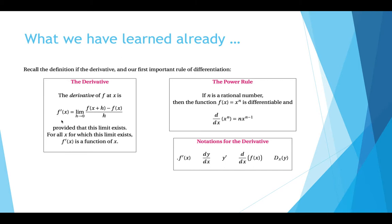This is provided that this limit exists. For all x for which this limit exists, f prime of x is a function of x.